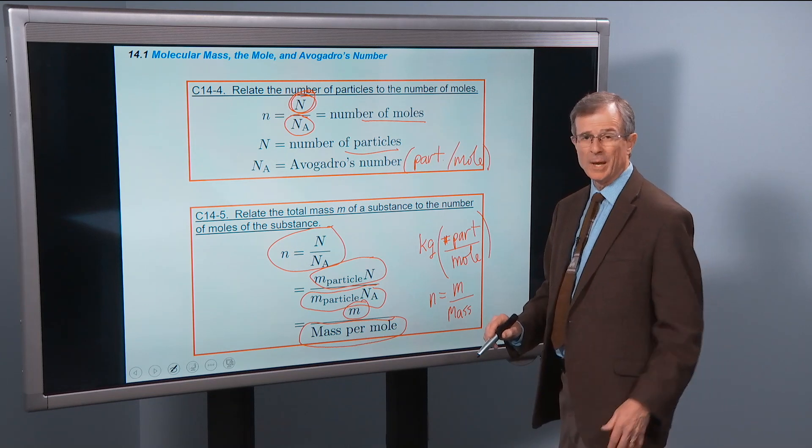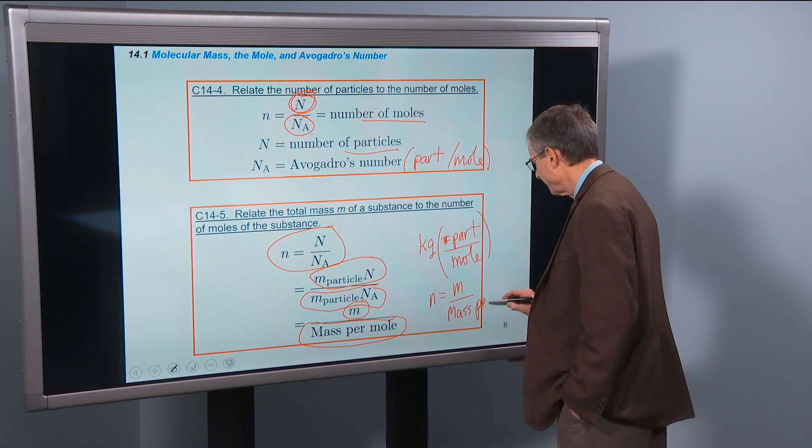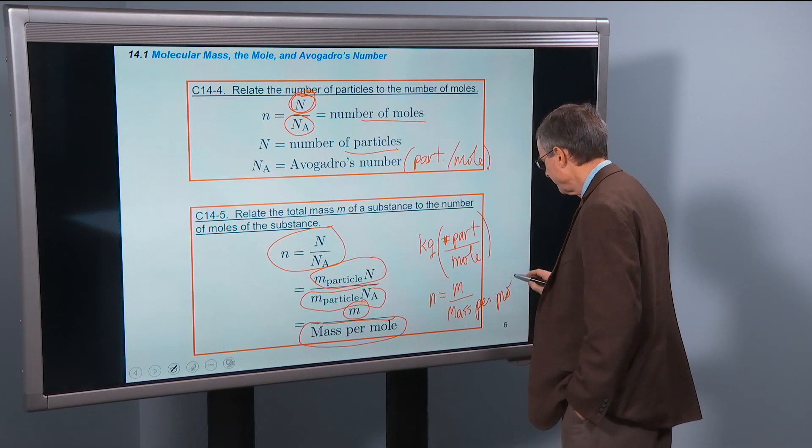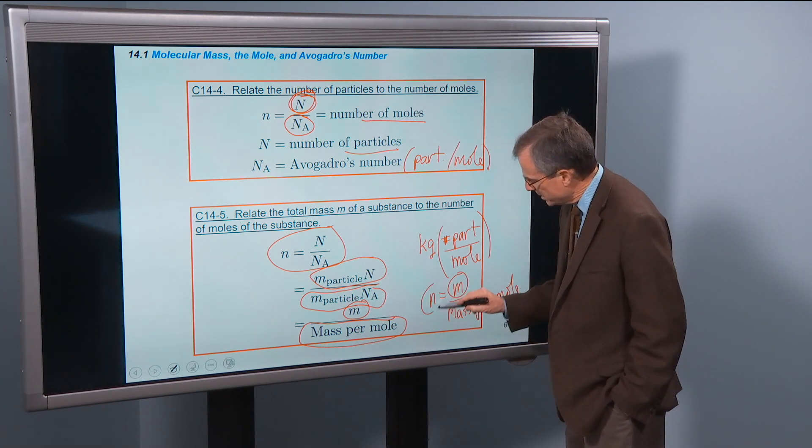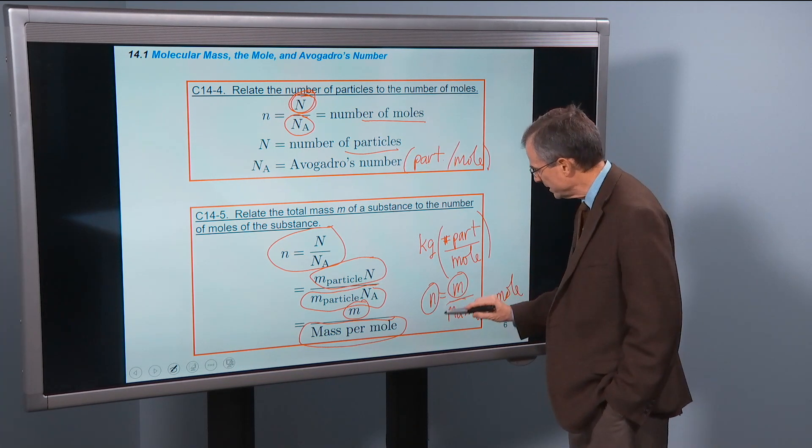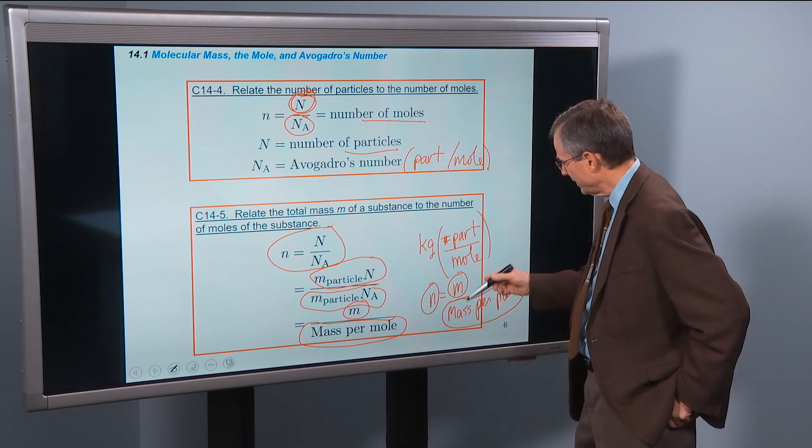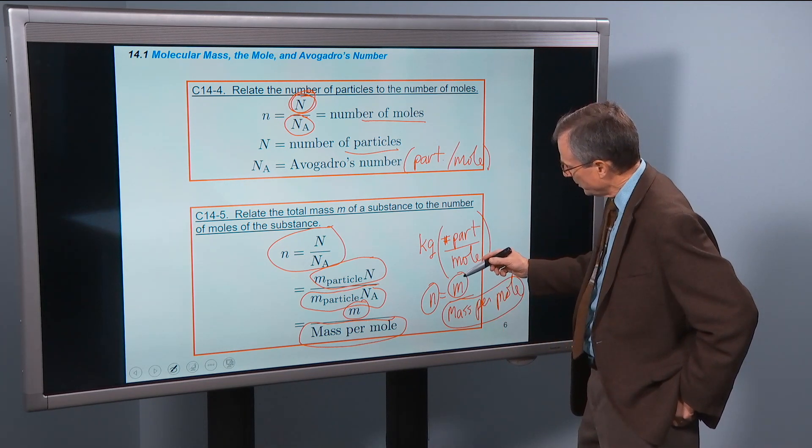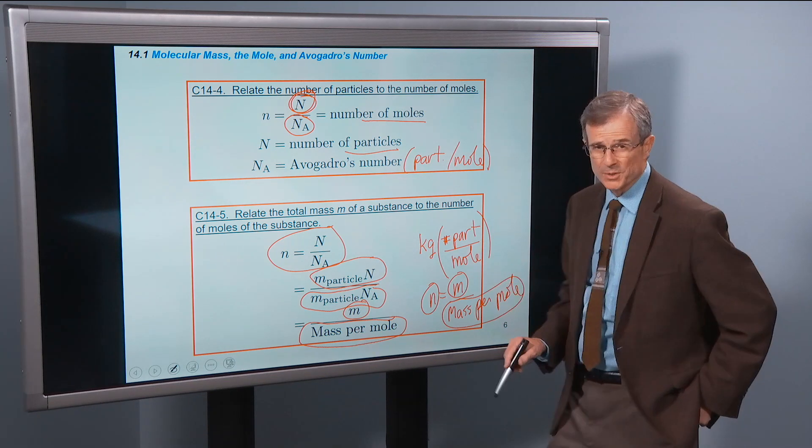For hydrogen, the mass per mole is 1.008 grams per mole. So this equation, n equals m over the mass per mole, or sometimes called the atomic mass or atomic weight depending on where you went to school. This is the total mass of the substance, this is the number of moles of that substance, and this is the mass per mole.